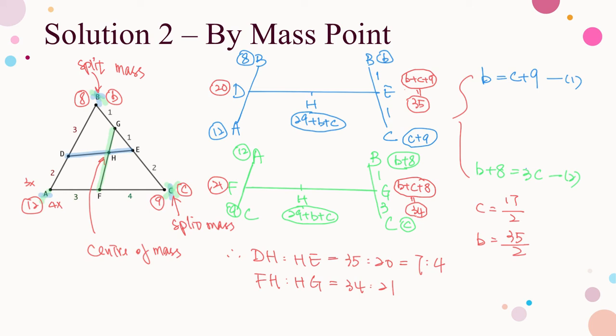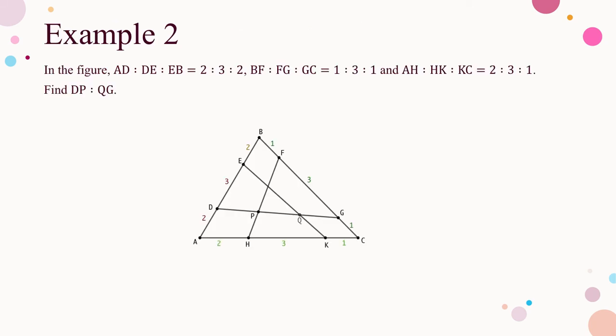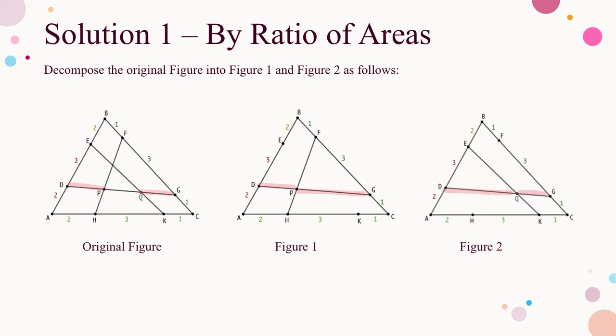I suppose it is the first time for you to learn this technique, which may look a bit complicated. But if you have a good understanding and mastery of the techniques of splitting mass in this configuration, you will find the calculation is much faster than the previous solution obtained by ratio of areas. Here is another example of the third configuration for consolidation. The diagram looks a bit complicated, but if you observe it more carefully, the diagram can be regarded as the overlapping of two triangles with the third configuration — the combination of figure 1 and figure 2. I leave the solution by ratio of areas for you as an exercise and do it again by mass point as consolidation.